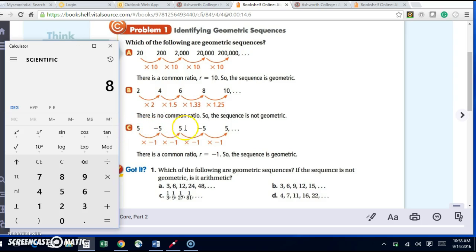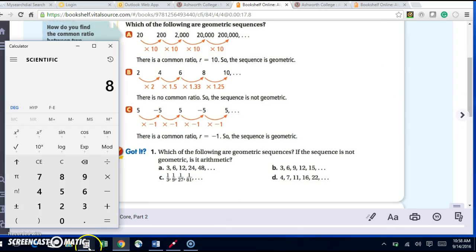We have 5, negative 5, 5, negative 5, 5. So again, I am going to say negative 5 divided by 5, and I get negative 1. And so negative 5 times negative 1 gives me my next term. Then I'm going to say 5 times negative 1 gives me negative 5 again. So my common ratio is negative 1.